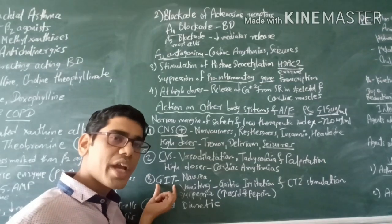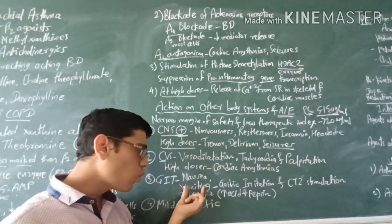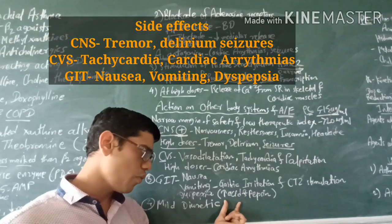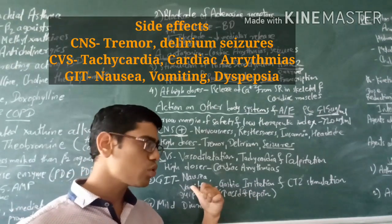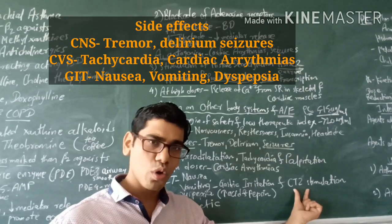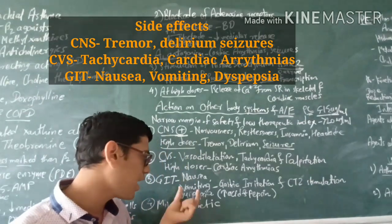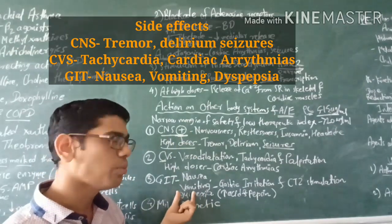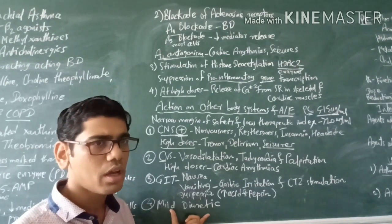In the GIT, theophylline can produce nausea, vomiting, and dyspepsia. Vomiting can occur for two reasons: first, gastric irritation because theophylline increases acid and pepsin secretion in the stomach; second, theophylline can stimulate the CTZ (chemoreceptor trigger zone), which is located in the brain but outside the blood-brain barrier. Apart from these, theophyllines are mild diuretics because they inhibit the tubular absorption of sodium and water.